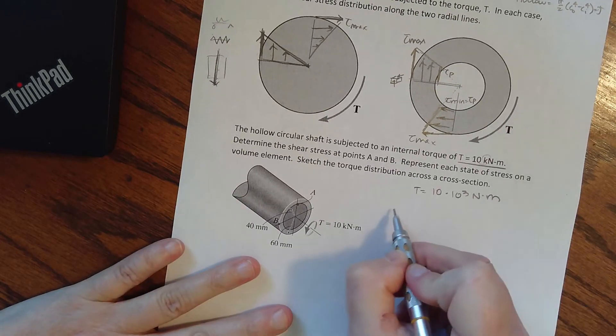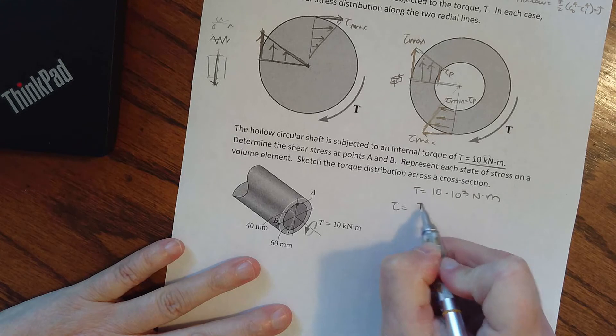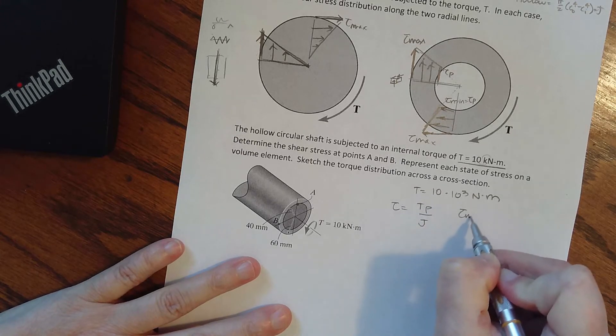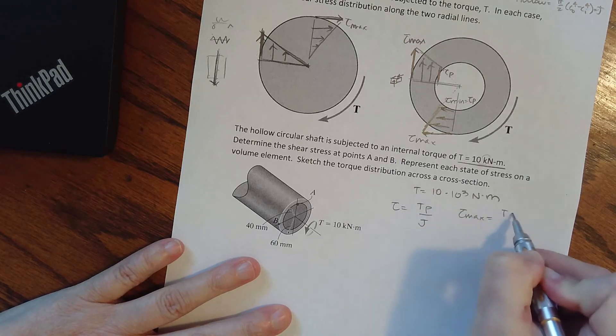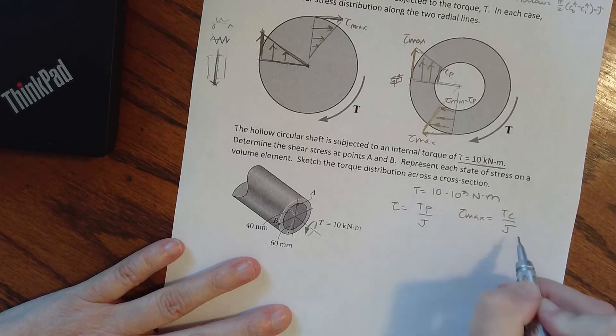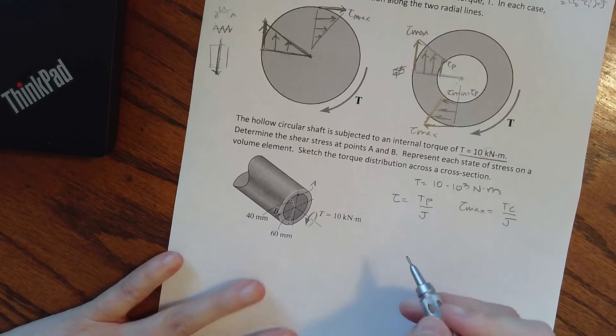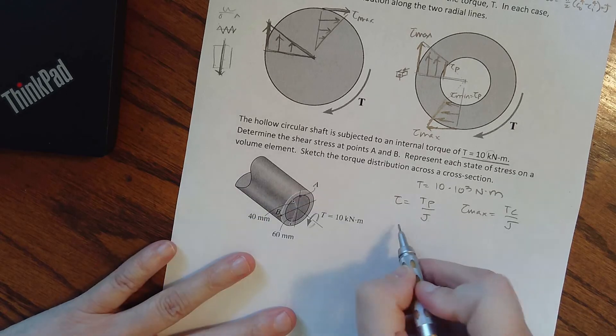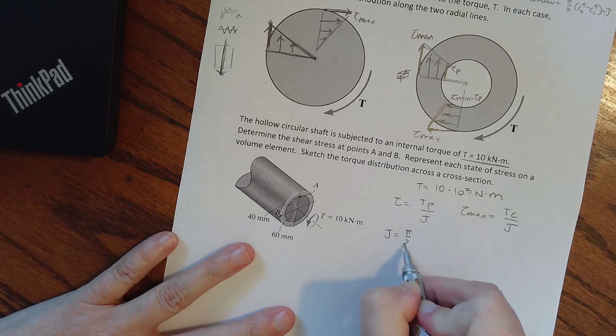So I know that my shear stress equals T rho over J, and the maximum on the outside is T C over J. J is the same for both, it's like that moment of inertia, and we can see that it is hollow.